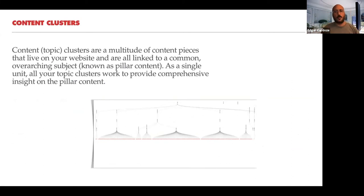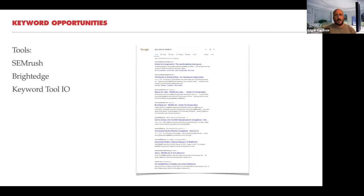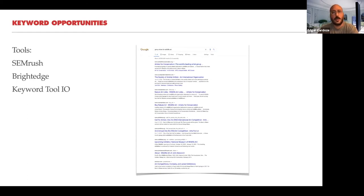Site architecture plays a role in where the bot goes. Content clusters are content pieces on your website all linked to an overarching subject. When Google asks, 'Are you an authority on being a painter in Dallas?' they want to see not just one page but a multitude of pages showing your authoritativeness on that subject. For keyword opportunities, tools like SEMrush, BrightEdge, and Keyword Tool IO give you search volume for keywords at a national level. When you look at them enough, they reveal opportunities — keywords nobody is ranking for, or less competitive landscapes where you can create content.